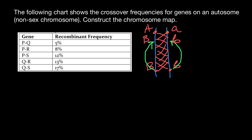The genes with the highest recombination frequency are Q and S. So let's highlight that we're working with this set of genes. Here is a fragment of DNA with gene Q and gene S. We have 17 map units between them, so our recombination frequency is 17%.